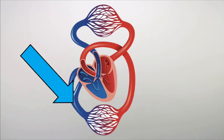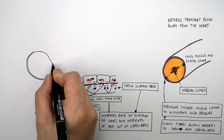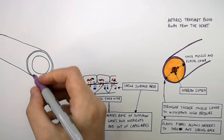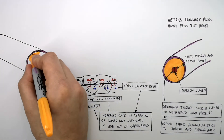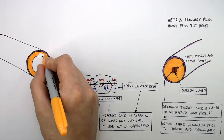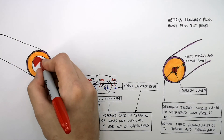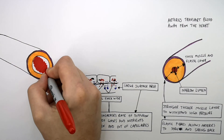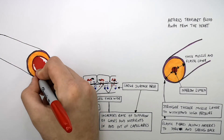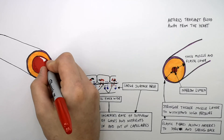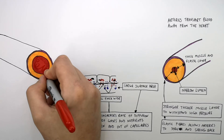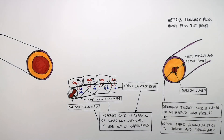We're now going to look at the adaptations of veins that transport blood back to the heart at low blood pressure. Veins have a much thinner muscle and elastic layer than arteries, but they've got a much wider lumen — the empty space like a tube where the blood is transported.